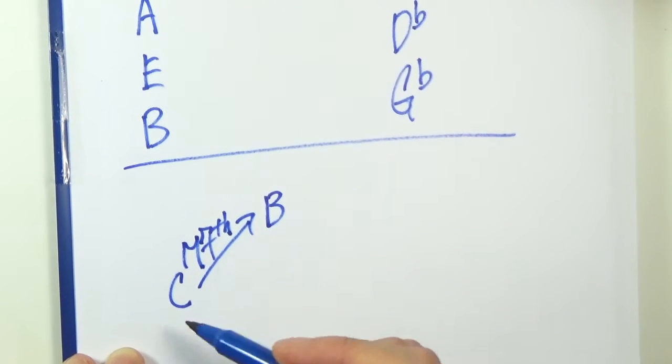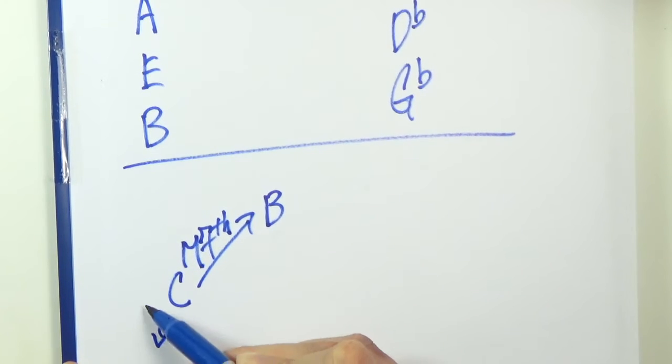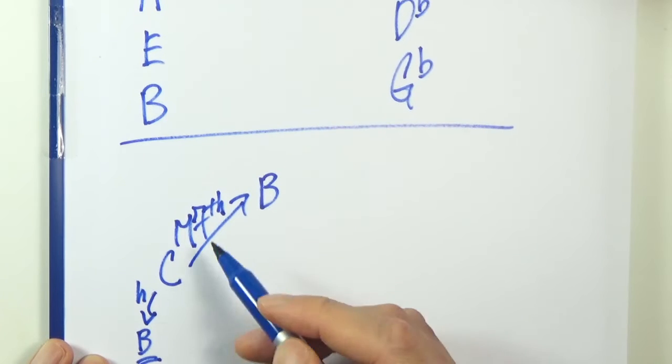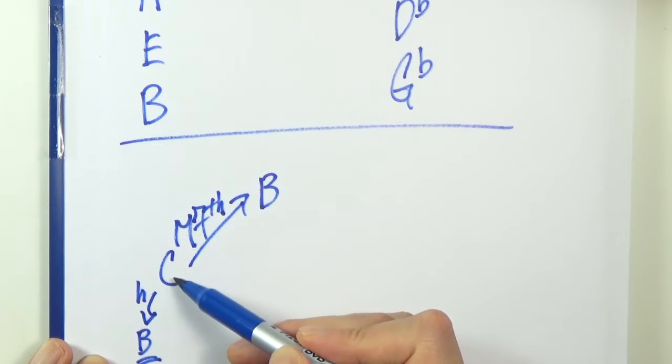I kind of have this one memorized already. If you want a major 7th, instead of counting up, you just go backwards by half step. You should have the same note here, B. That's a shortcut. B would be the major 7th of C. The way you obtain B is by going backwards half step from C.